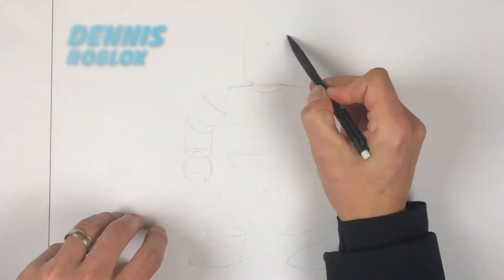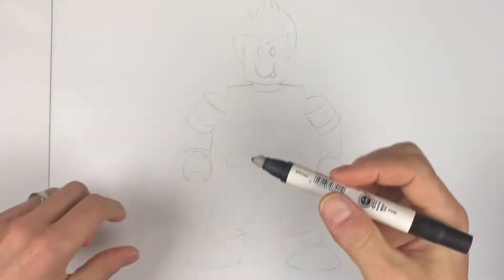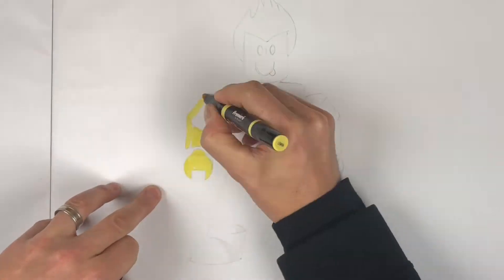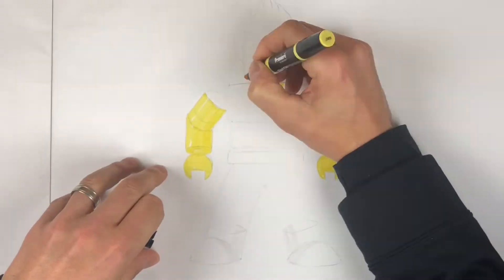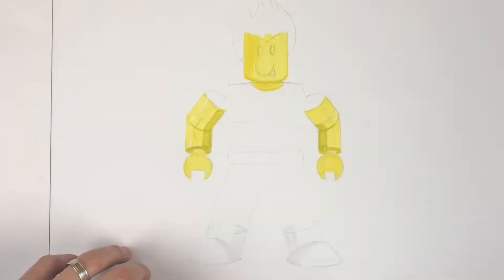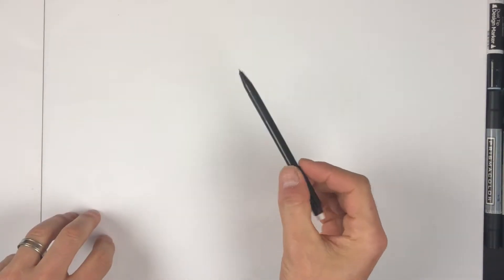I'm going to use a mechanical pencil right now because I don't want to commit to certain shapes right away. I'm going to try to block this in and make sure I have the right proportions.